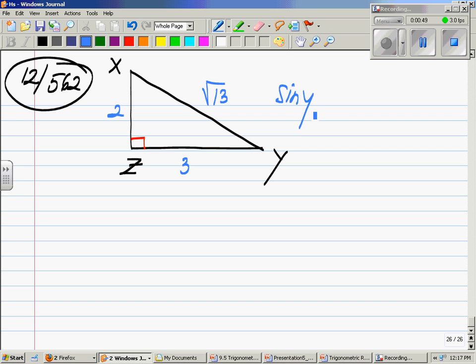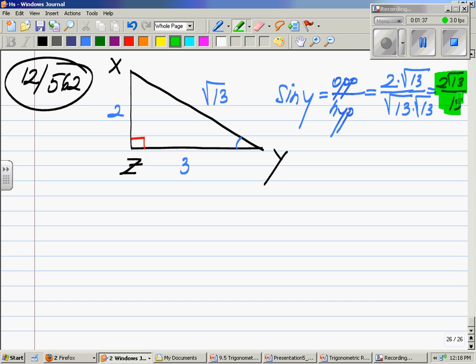What is sine of Y equal to? Like any other sine in a given right triangle, would be the opposite over hypotenuse. What is the opposite of Y? This is angle Y. The opposite leg will be 2, divided by your hypotenuse, which is square root 13. Now, you're not done because you cannot leave square root 13 as a denominator. So, I will multiply top and bottom by square root 13. And this gives me 2 square root 13 over, what is square root 13 squared? 13. And this is your sine of Y.